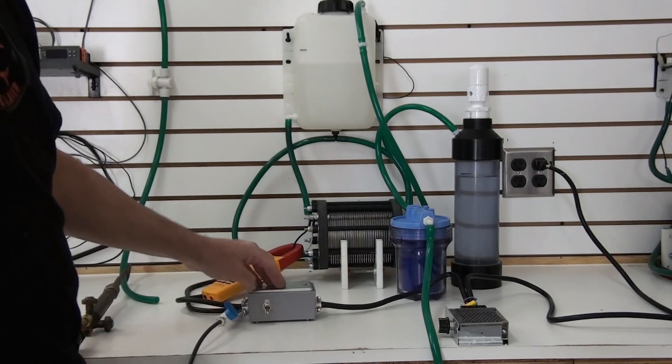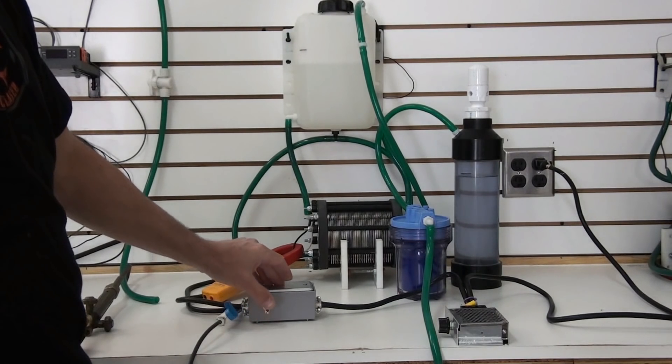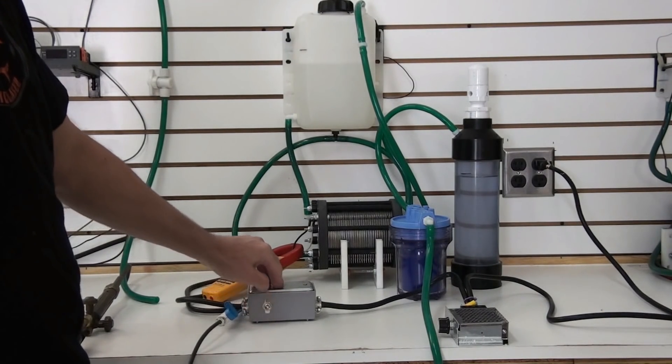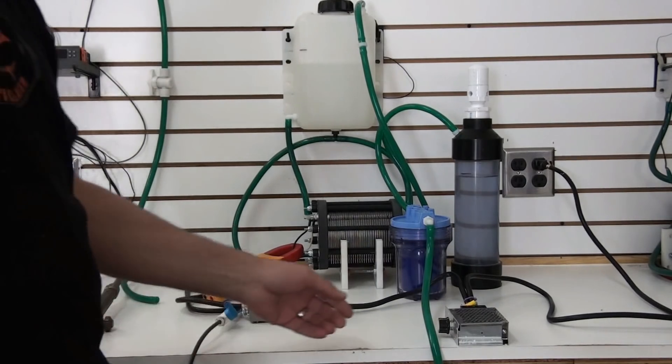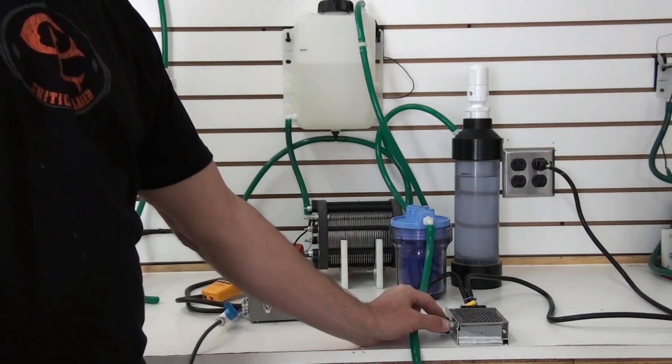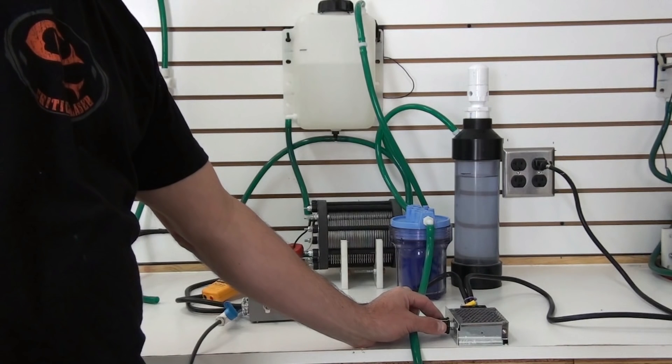I'm going to go ahead and turn it on now. Here's our on-off switch, right here on the side of our AC to DC converter. We turn on the system. It'll start making gas. We have it turned down right here so I'm going to go ahead and turn it up a little bit.